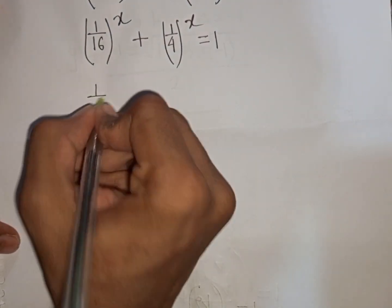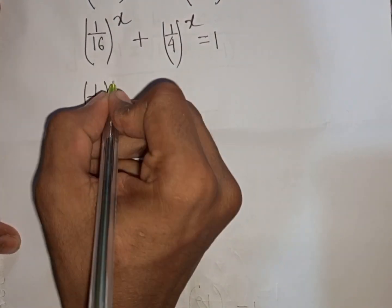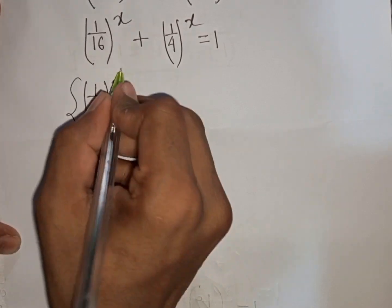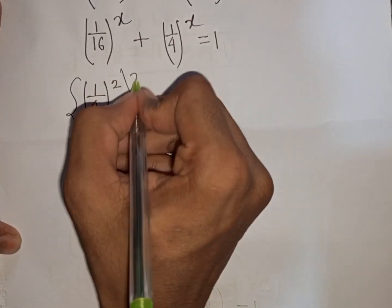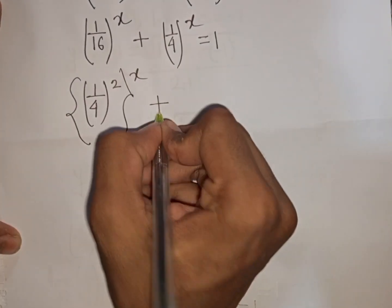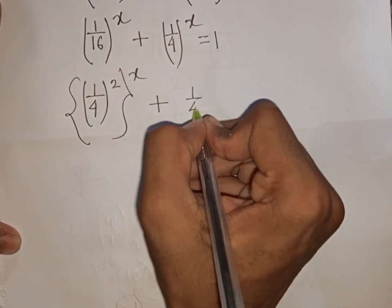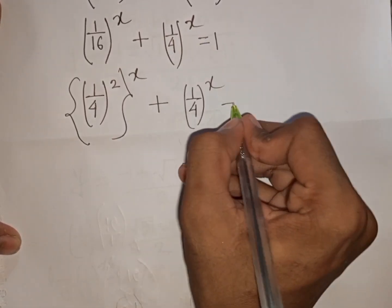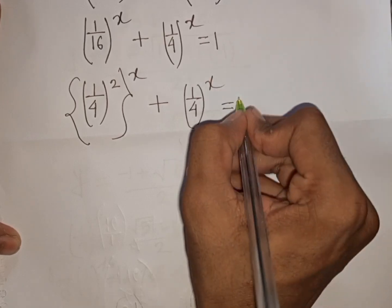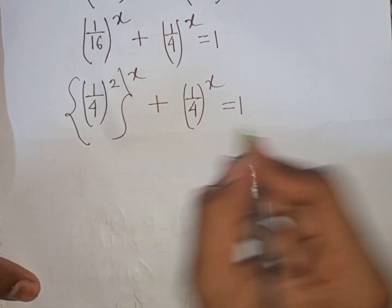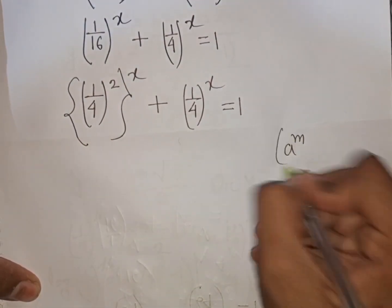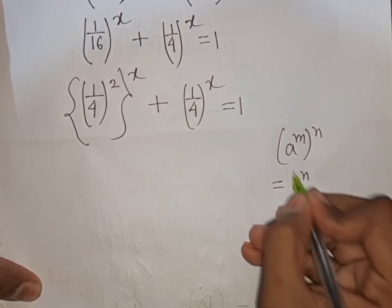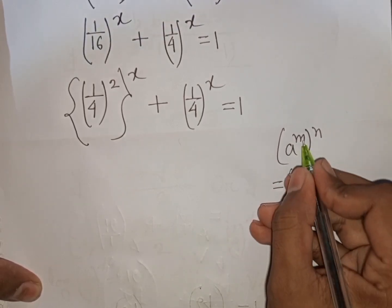Now 1/16 can be written as (1/4)^2, so the first term becomes (1/4)^(2x). Applying the exponential rule that (a^m)^n = a^(mn), we can rewrite (1/4)^(2x) as [(1/4)^x]^2.